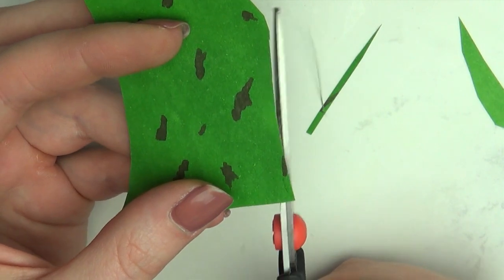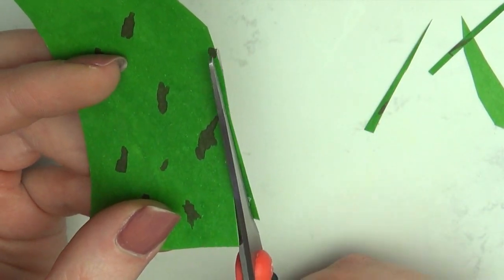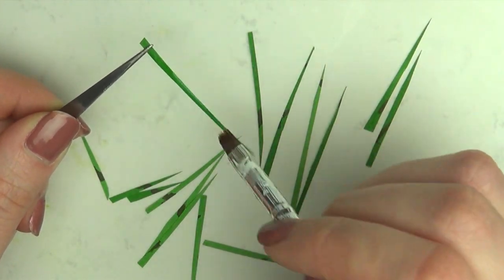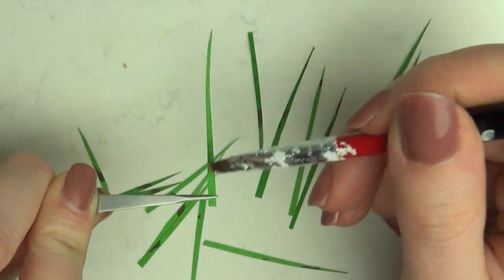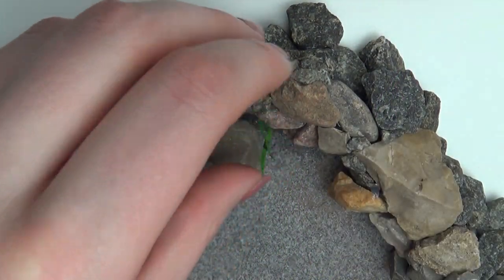I made another grass-like plant by cutting out small strips of the now green paper. These will also be in contact with the resin, so they have to be glazed properly as well. I glued these to the corner of the pond with hot glue.